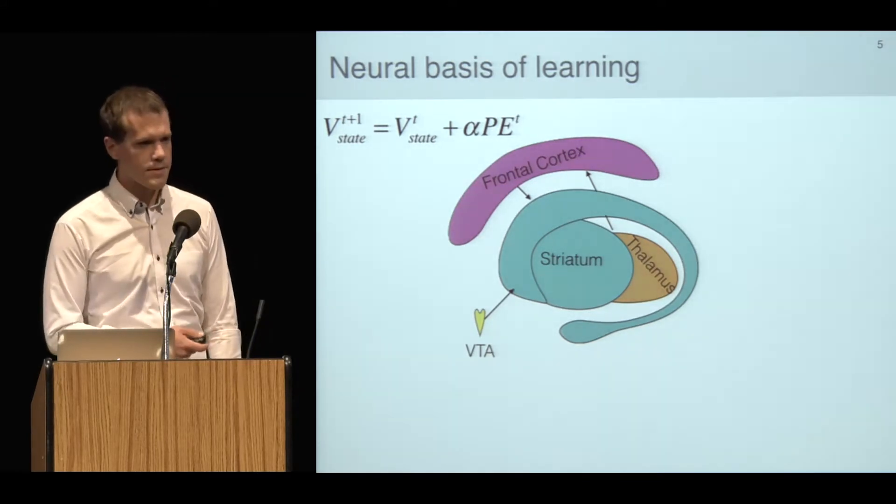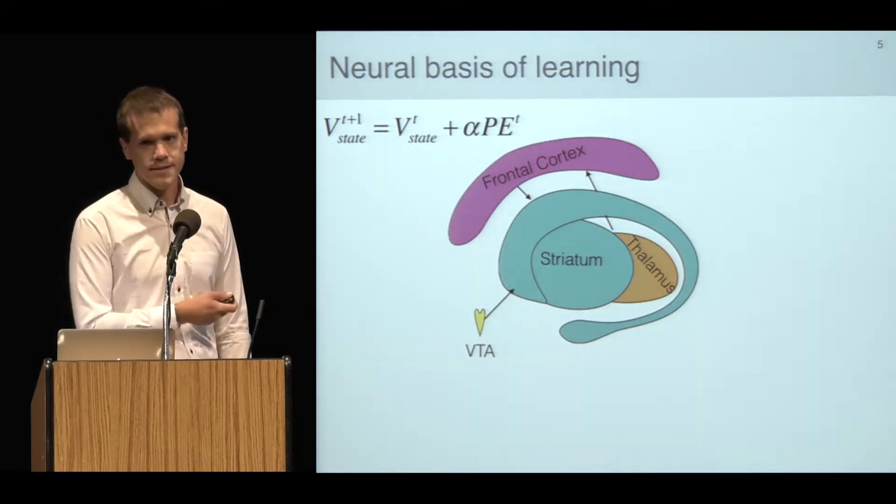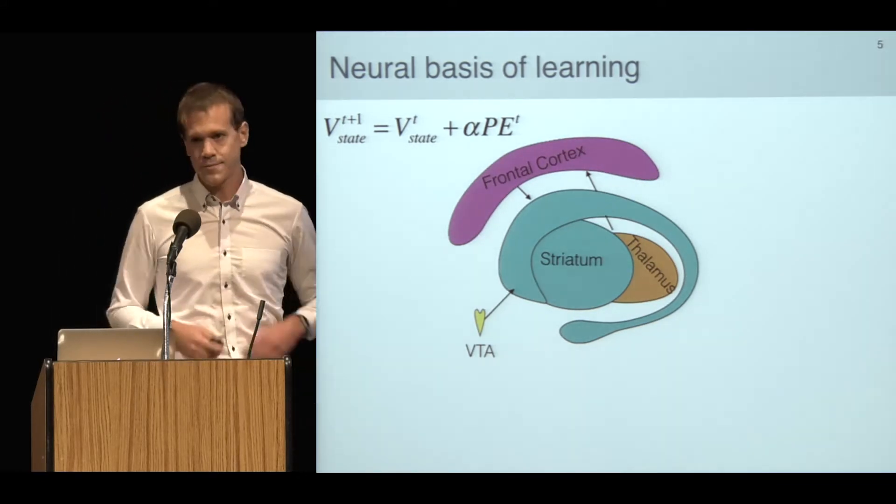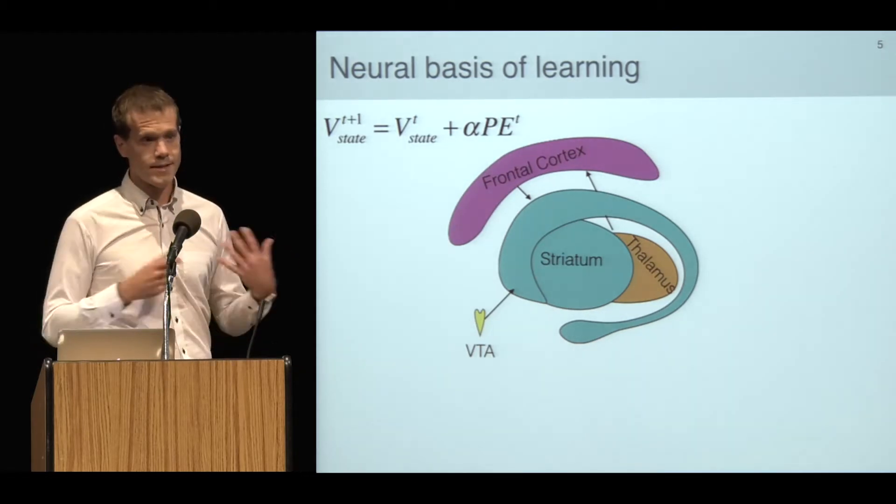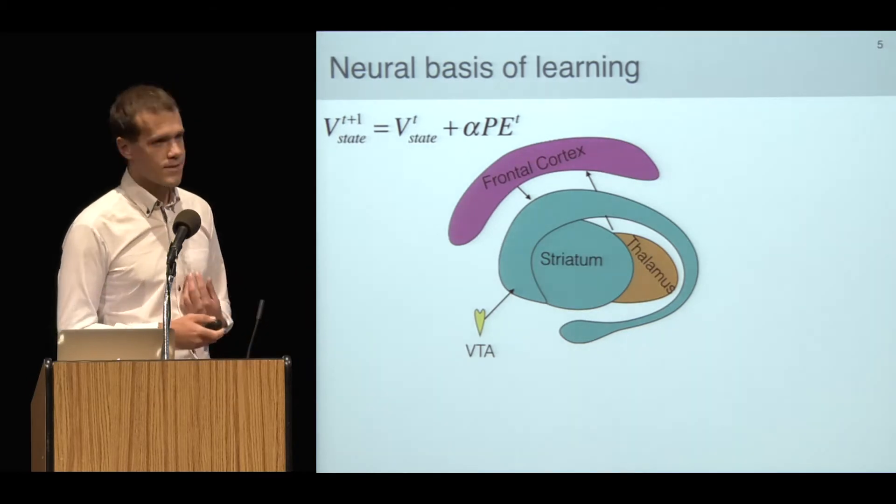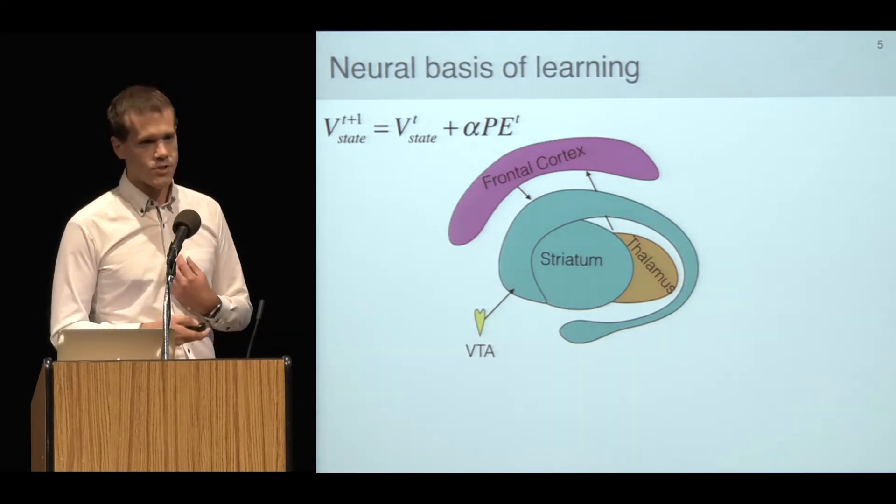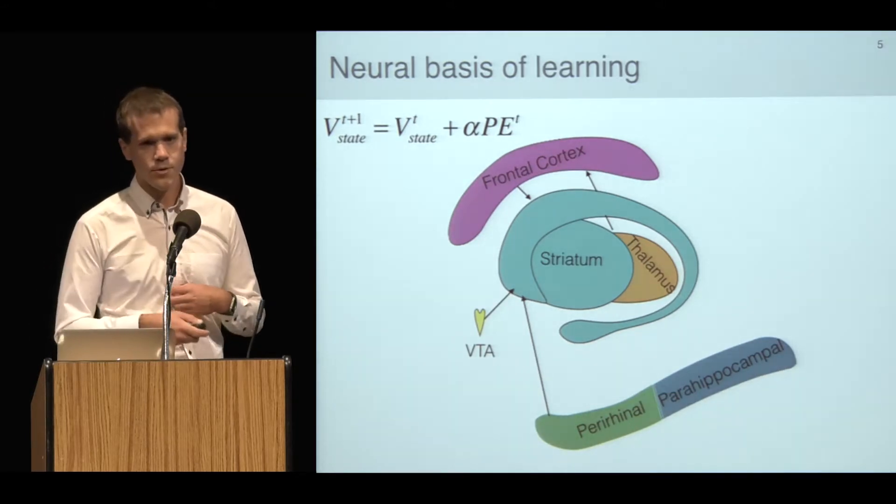A piece of this model that's often left out is the neural representation of the states themselves. The striatum is not a sensory structure. It doesn't know anything about the world except for what it gets via its inputs. It gets inputs from most places in the cerebrum. I'm going to highlight two that are important today, which are the perirhinal and parahippocampal cortex.